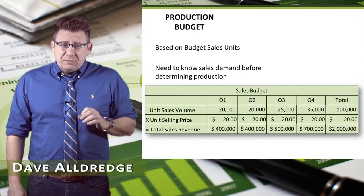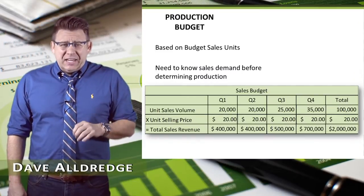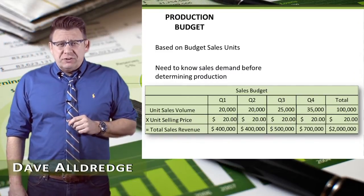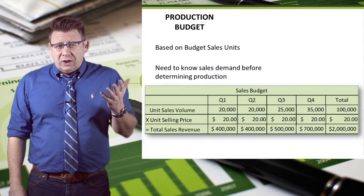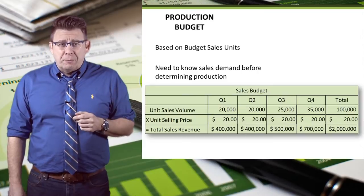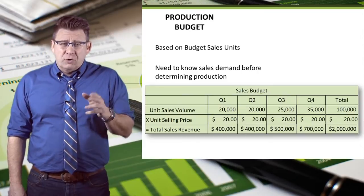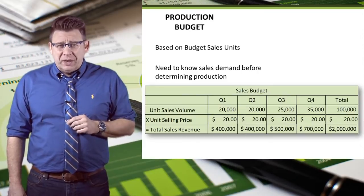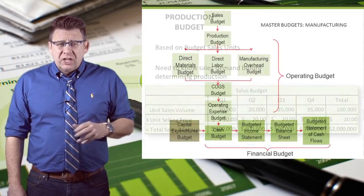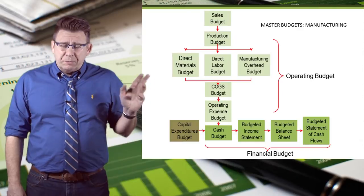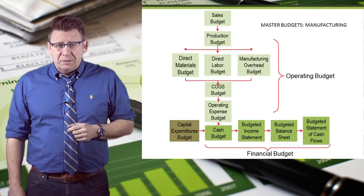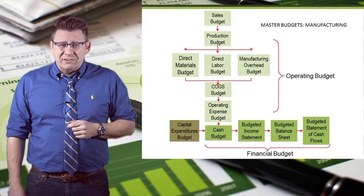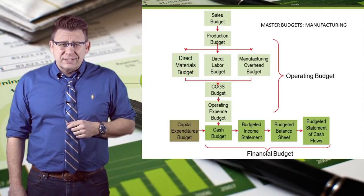The production budget is based on data from the sales budget. We need to know what the demand for our products will be before we know how many we're going to produce. You can see that the production budget is the second budget completed in the master budget process.